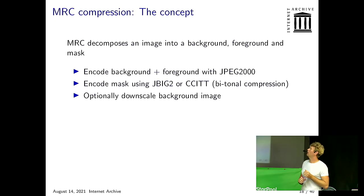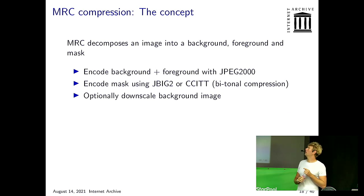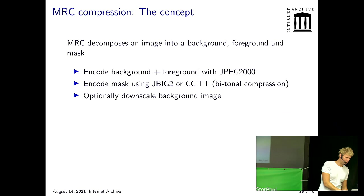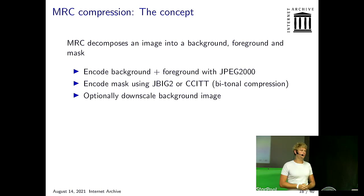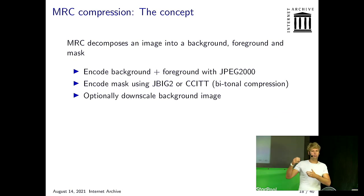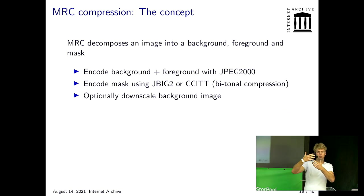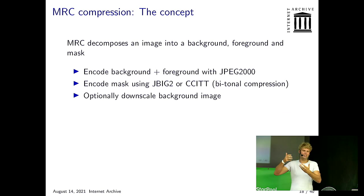I mentioned MRC compression a couple of times. MRC stands for Mixed Raster Content compression, and it's a lossy compression method — once you compress something, you cannot get all the original data back. But for us that's fine, because most parts of the book we don't really care about. We care about the text, maybe some images, but the exact background doesn't really matter. We care about the things that people read, so if we don't get that back after compression, that's fine.